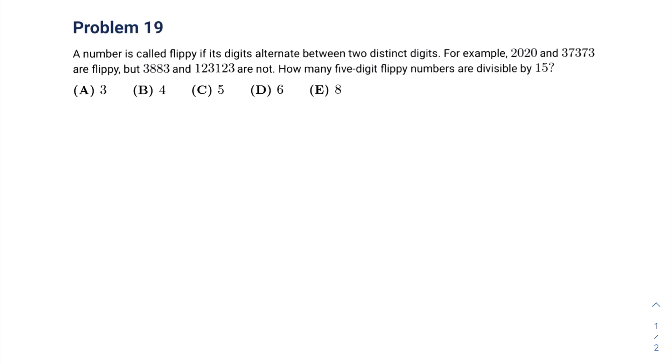A number is called flippy if its digits alternate between two distinct digits. For example, 2,020 and 37,373 are flippy, but 3,883 and 123,123 are not. How many 5-digit flippy numbers are divisible by 15?